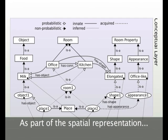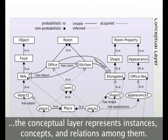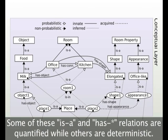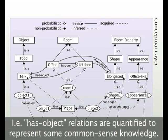As part of the spatial representation, the conceptual layer represents instances, concepts and relations among them. Some of these IS-A and HAS-A relations are quantified while others are deterministic. In fact, HAS-object relations are quantified to represent some common sense knowledge.